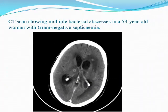This is a brain CT showing multiple cerebral abscesses. When the abscess is spread by hematogenous spread — this patient has gram-negative septicemia — it usually involves the basal ganglia. Multiple hematogenous-spread cerebral abscesses are mainly in the region of the basal ganglia.